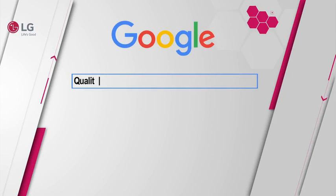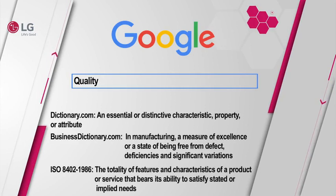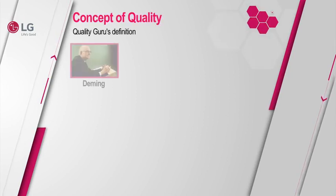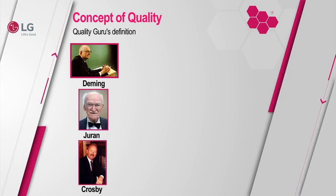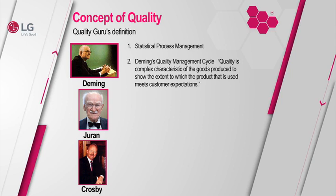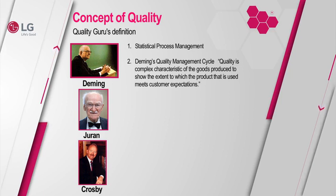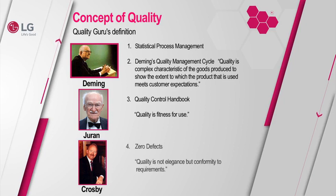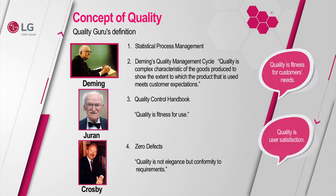Looking at definitions, quality is described as an essential or distinctive characteristic, property, or attribute. The gurus of quality — Deming, Juran, and Crosby — believe that quality is a statistical process management or a complex characteristic of goods produced to show the extent to which the product meets customer expectations. Juran says quality is fitness for use; Crosby says quality is not elegance but conformity to requirements. From this, quality is fitness for customer needs and the user's satisfaction.